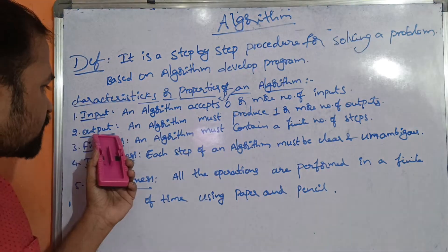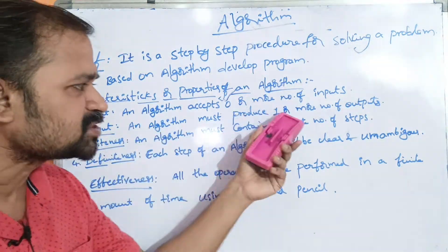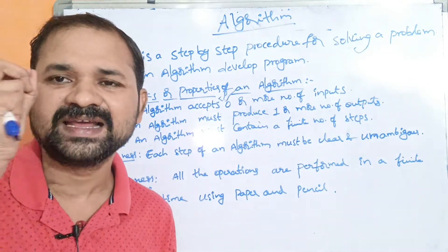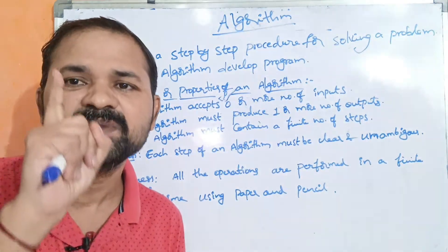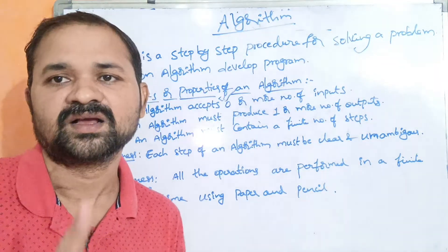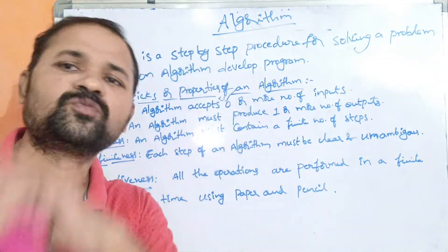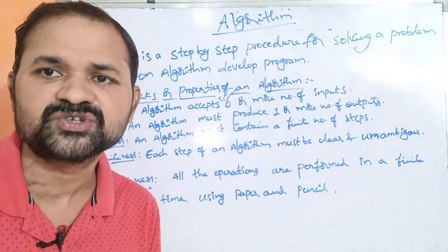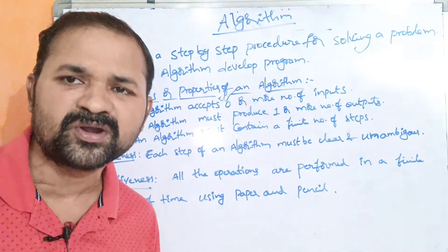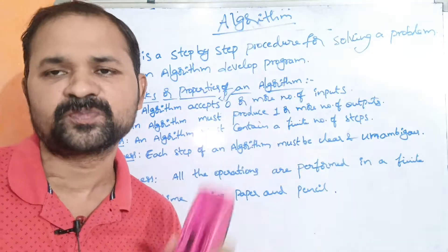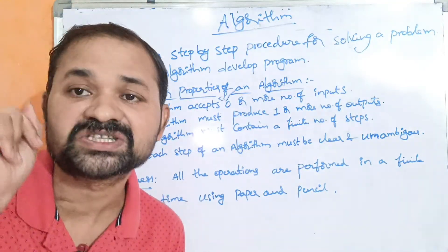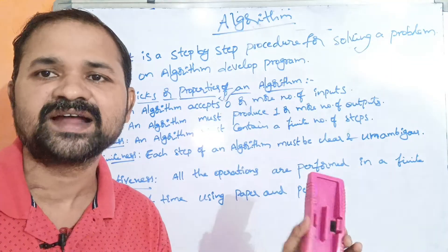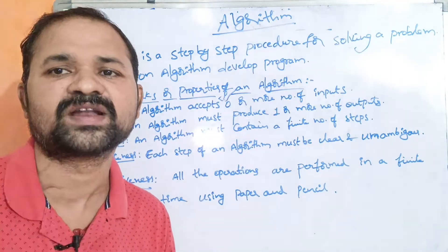Now let's see the second property: output. An algorithm must produce one or more number of outputs. It may produce one, two, three, or four outputs — any number. But at least one output must be produced by the algorithm. So an algorithm must produce a minimum of one output.